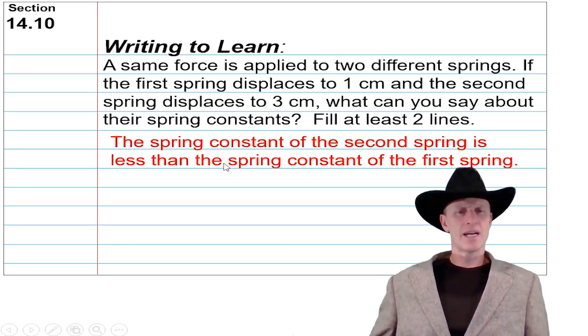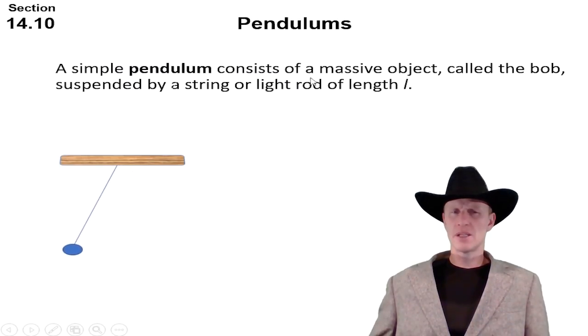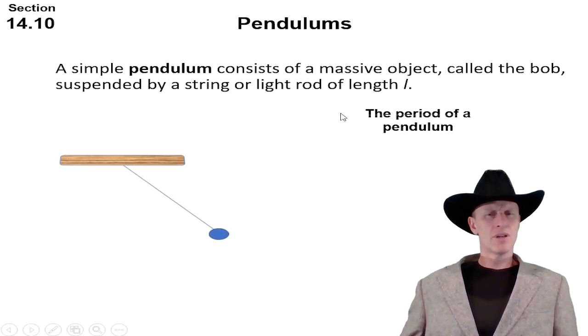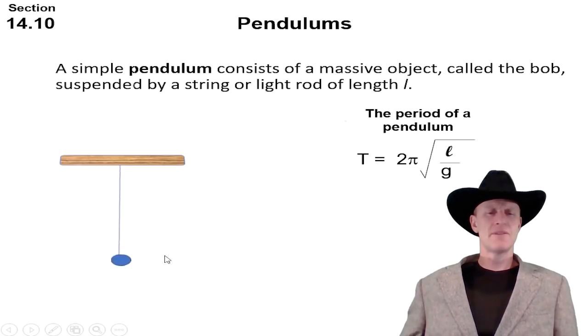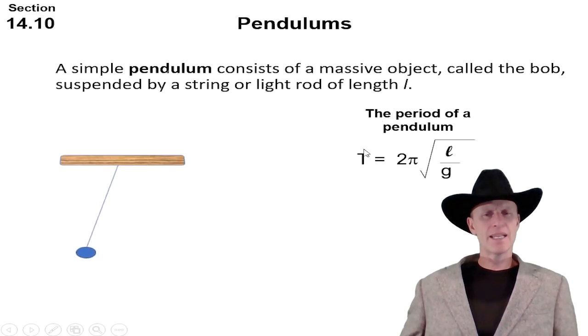All right, so let's focus on the pendulum. A simple pendulum consists of a massive object called the bob suspended by a string or light rod of length L. So now we can measure the period of a pendulum with this formula. The L in this formula represents the length, measured from the pivot point down to and including half of the bob. And this g is 9.8 here on earth, and 2 pi, pi is 3.14159. And T, capital T, is your period measured in seconds. Sticking with SI units, you want to measure your length in meters and you'll get seconds.